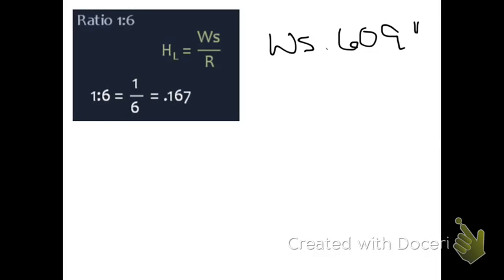The ratio, in our case, we're going to use 1 to 6, 1 to 6 height ratio, and that simply converts, 1 to 6 is a fraction of 1 sixth. Divide 6 by 1, you get 0.167.